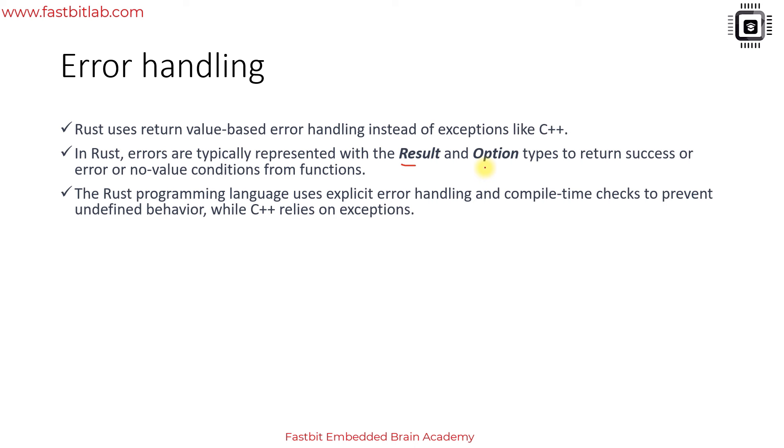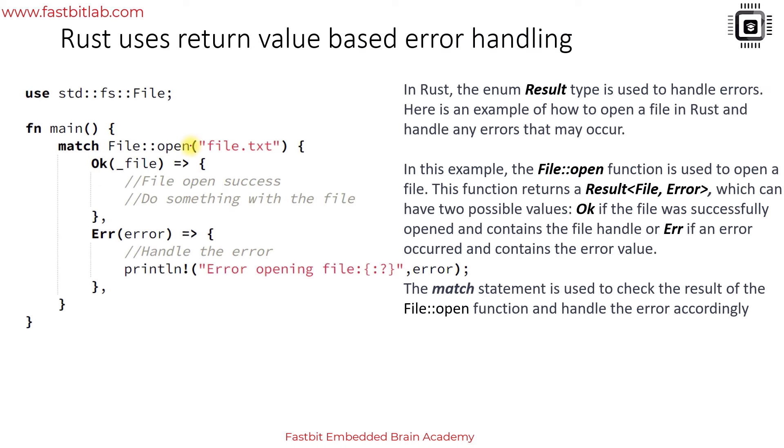Basically what happens is in Rust, Rust uses return value based error handling instead of exceptions like C++. C++ implements exceptions using try and catch block. Such exception handling is not available in Rust. Rust uses return value based error handling and that return value is represented with the result and option types.